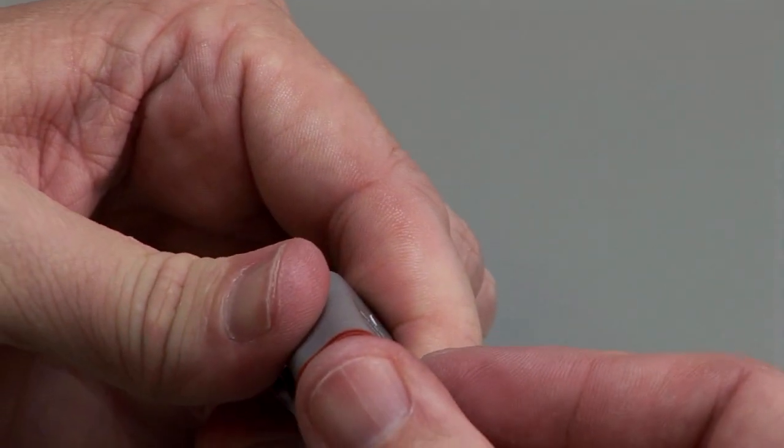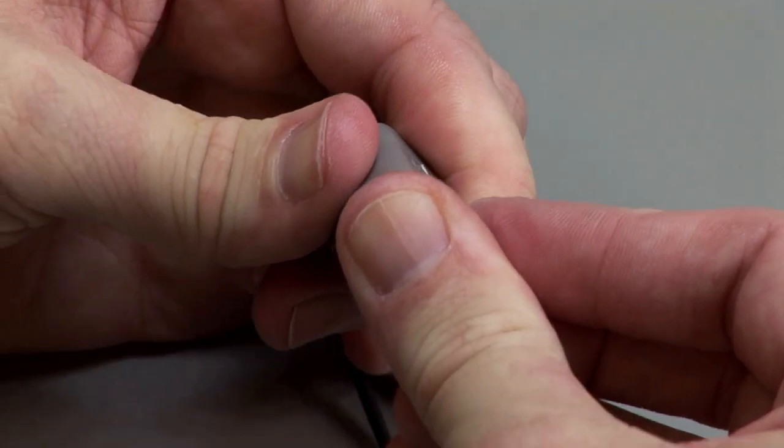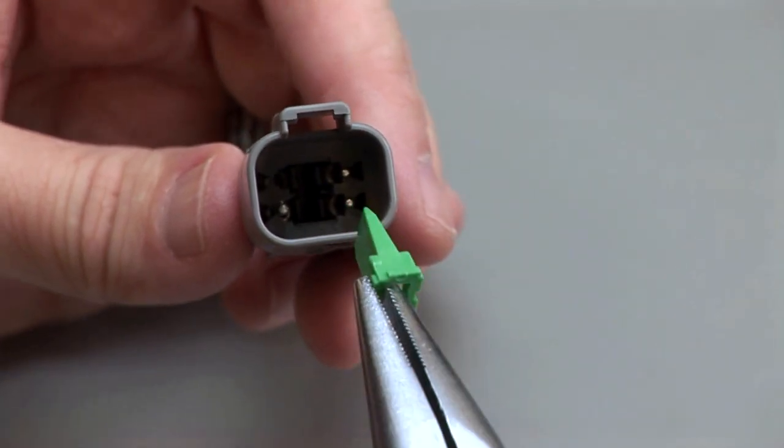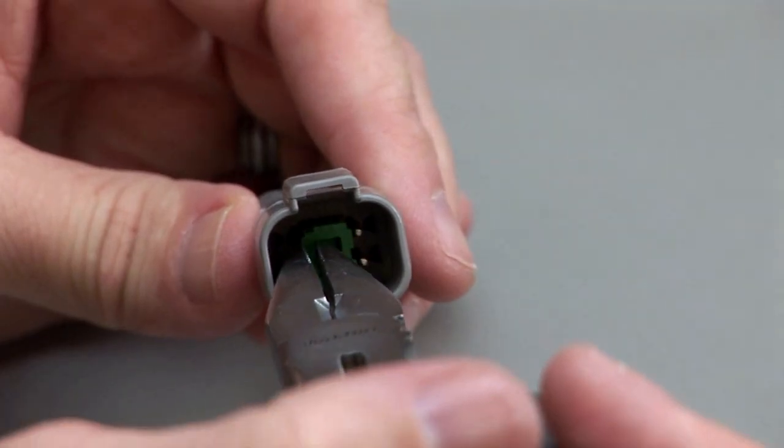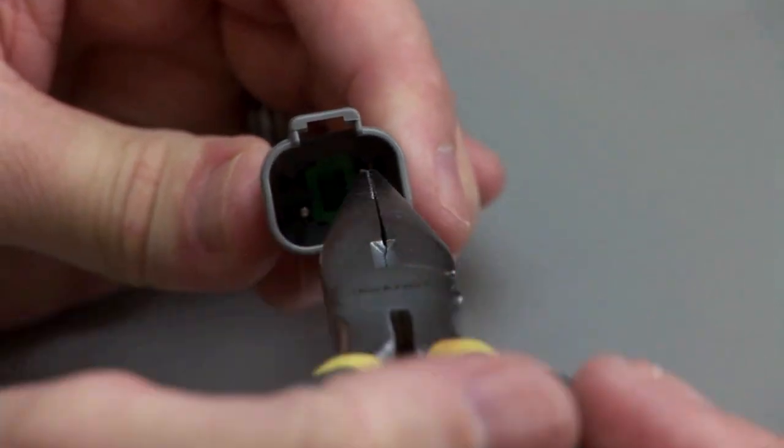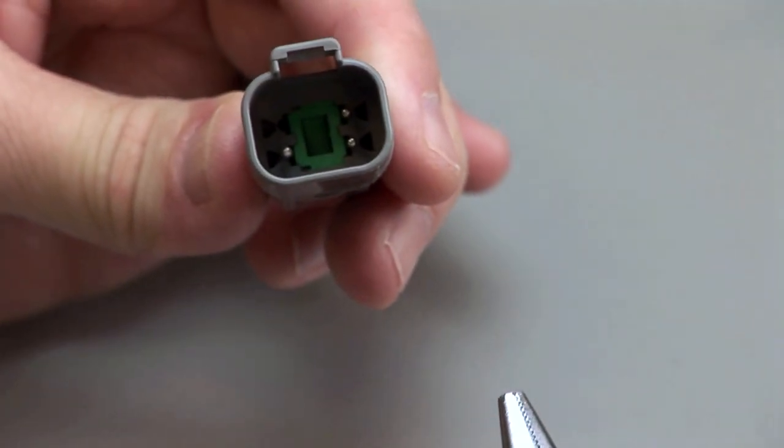To insert the wedge lock in the receptacle housing, select the appropriate wedge lock. Carefully align the wedge lock between the locking fingers in the interface of the receptacle. Apply downward pressure until a click is heard and felt.